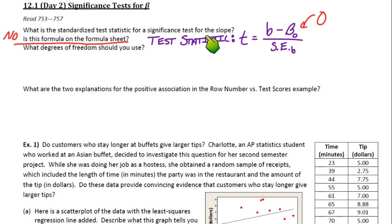Is this on the formula sheet? No, not the way it's written. And then what degrees of freedom should we use? So for scatter plots, we're going to use n minus 2. Just like there's two variables, x and y, it's like they get an extra degree of freedom because there's two variables. So the degrees of freedom will be n minus 2.